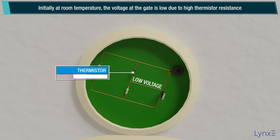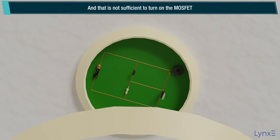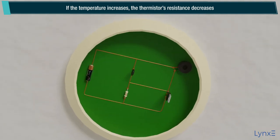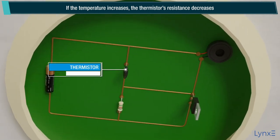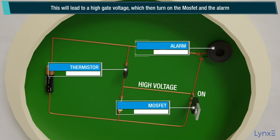And that is not sufficient to turn on the MOSFET. If the temperature increases, the thermistor's resistance decreases. This will lead to a high gate voltage, which then turns on the MOSFET and the alarm.